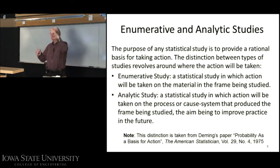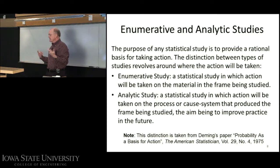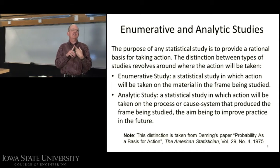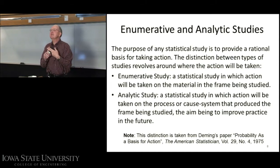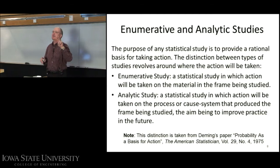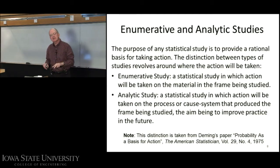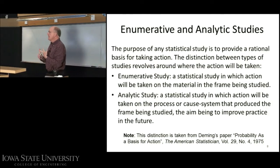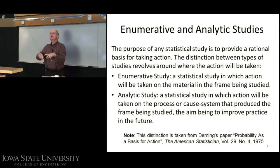Deming articulated a distinction of studies. He said the purpose of any statistical study should be to provide a rational basis for taking action. He made a distinction: there are two kinds of studies, and they differ by the action you're going to take. There's an enumerative study, which is where the action taken is going to be on the frame from which you drew your sample.